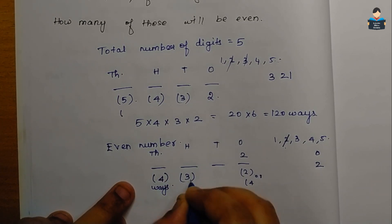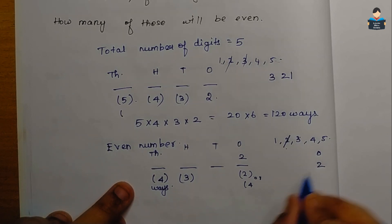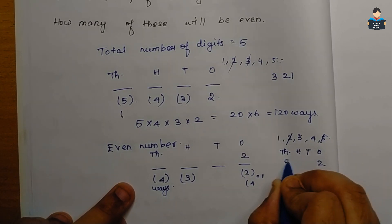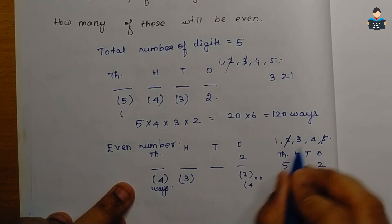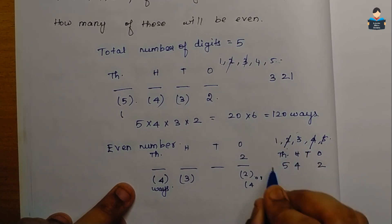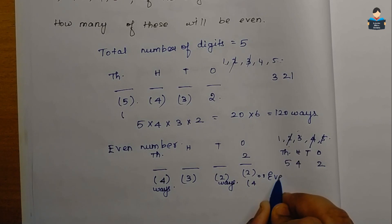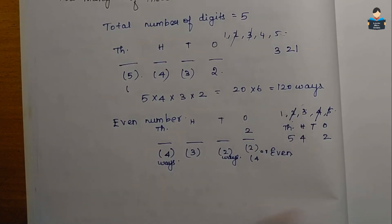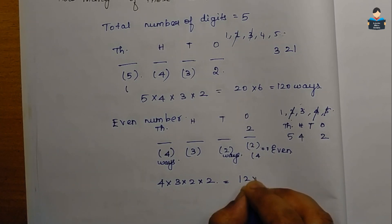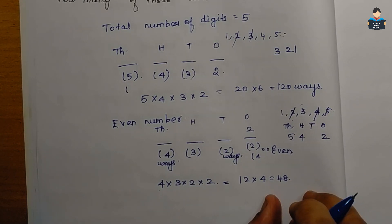For the 100s place, we have 3 remaining ways. For the 1000s place, we have 4 ways since one digit is used in the 1s place. For the 10s place, 2 ways. So using the multiplication principle: 4 × 3 × 2 × 2 = 48. Therefore, 48 even numbers can be formed.